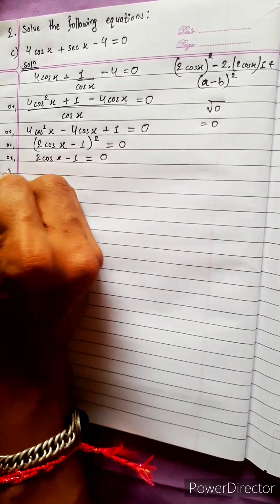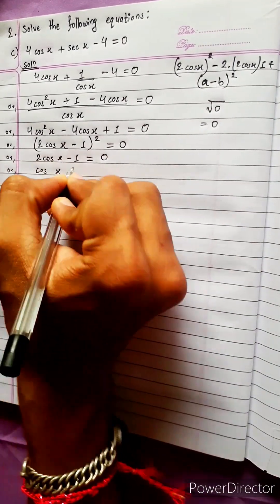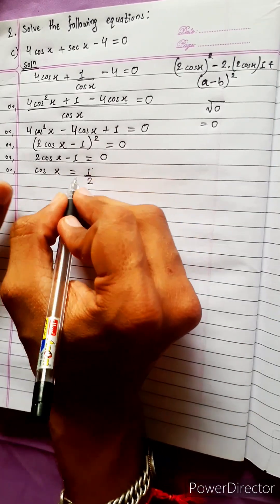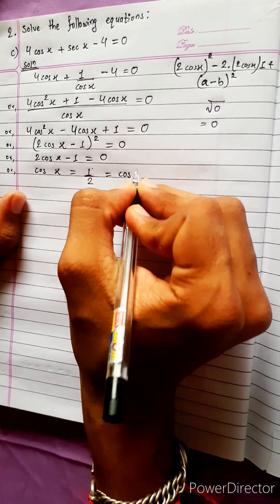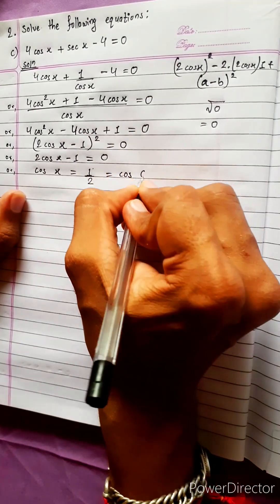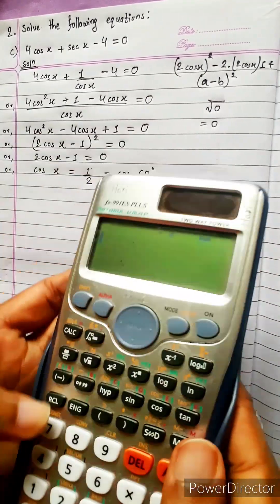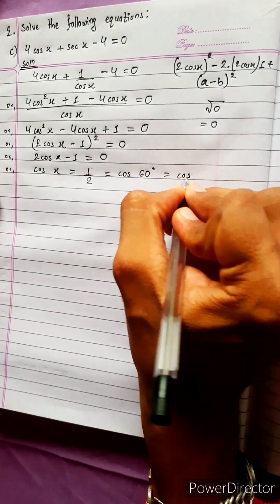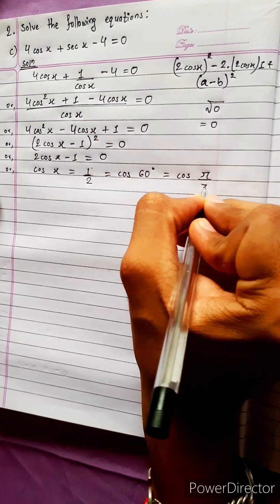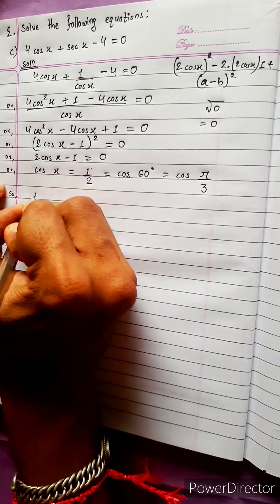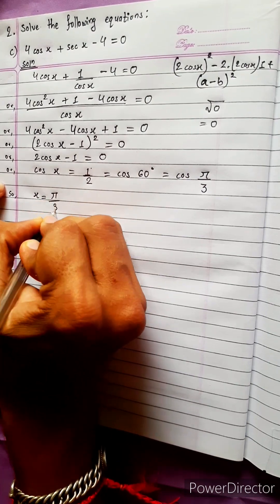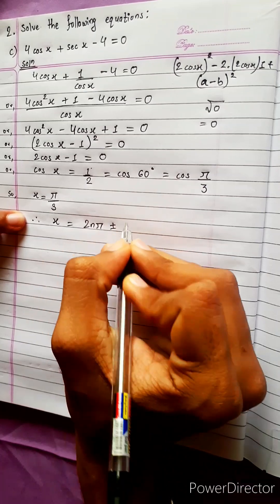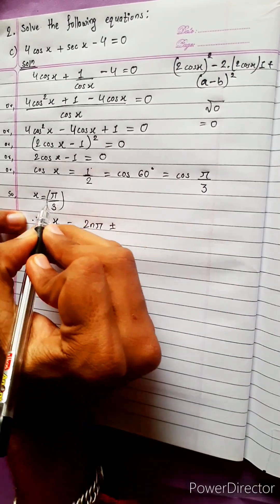So cos x = 1/2. Using the general formula, cos x = cos θ gives x = 2nπ ± θ. Here θ = π/3, since cos(π/3) = 1/2. Therefore x = 2nπ ± π/3.